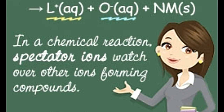The net ionic equation after cancelling the spectator ions from both sides is: 2Cl⁻ (aq) + Cu²⁺ (aq) → CuCl₂ (s). For the example of Na₂CO₃ (aq) and MgSO₄ (aq): MgSO₄ (aq) + Na₂CO₃ (aq) → MgCO₃ (s) + Na₂SO₄ (aq). The complete ionic equation gives Mg²⁺ (aq) + SO₄²⁻ (aq) + 2Na⁺ (aq) + CO₃²⁻ (aq) → MgCO₃ (s) + 2Na⁺ (aq) + SO₄²⁻ (aq). The spectator ions in Na₂CO₃ (aq) and MgSO₄ (aq) are Na⁺ (aq) and SO₄²⁻ (aq).